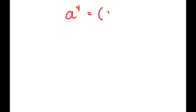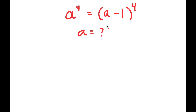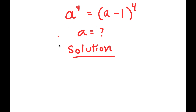In this video, I'm going to be solving the equation a to the power of 4 is equal to a minus 1 to the power of 4. My only variable in this equation is a, which is the variable I'll be solving for. I'm going to first rewrite this problem down here so I have a little more solving space. So my problem is a to the power of 4 is equal to a minus 1 to the power of 4.